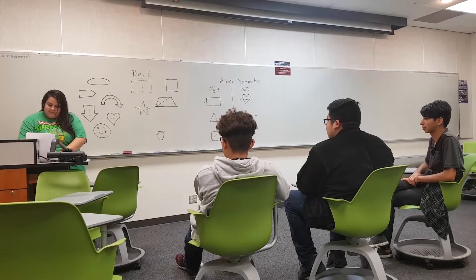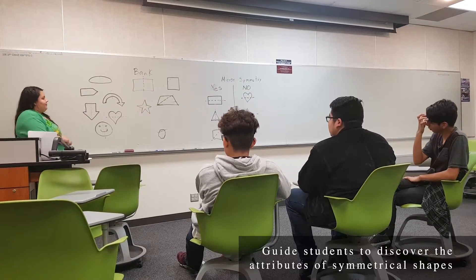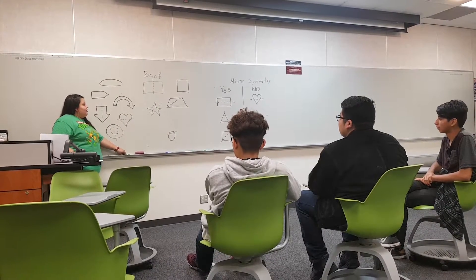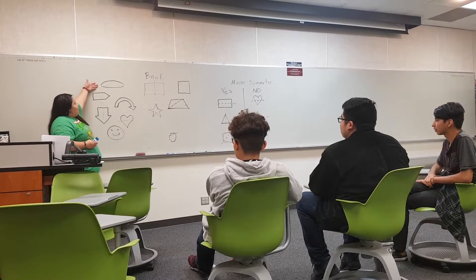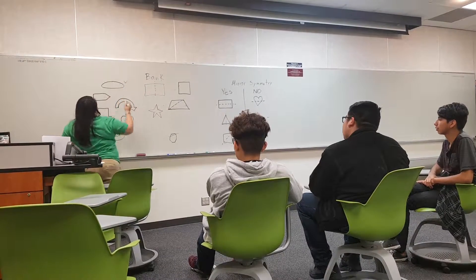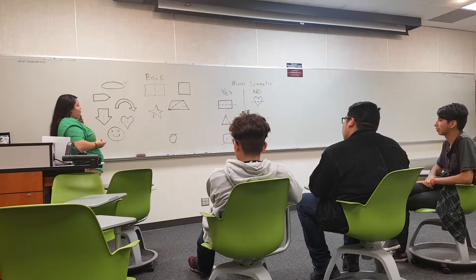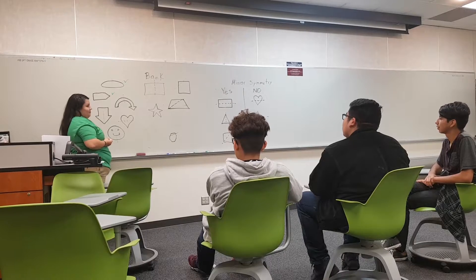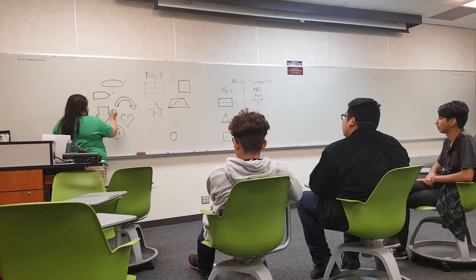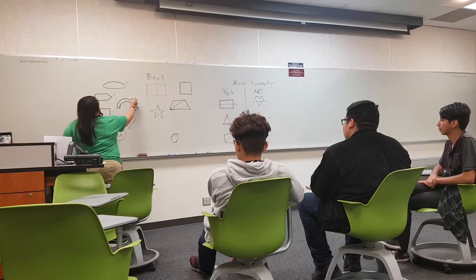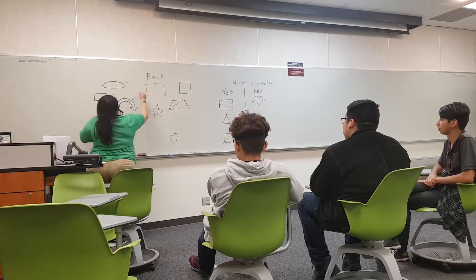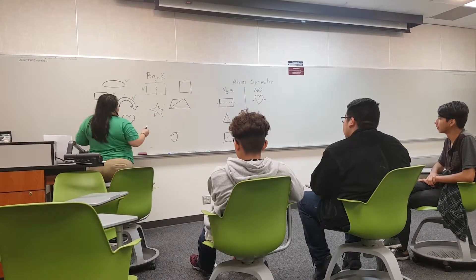Let's try to see some shapes. You already know what symmetry is and what is symmetrical and what is not. Let's review. Is this oval symmetrical? Yes. What about this shape? Yes. What about this shape? No. What about this one? Yes. What about this rectangle right here? Yes. What about this star? Yes.